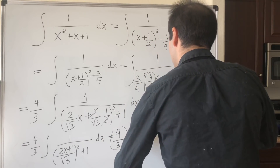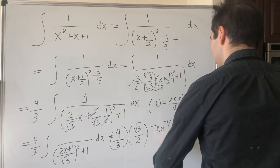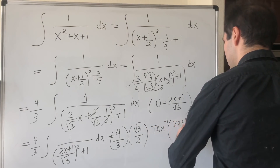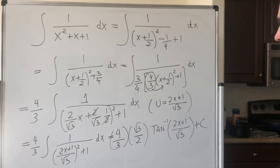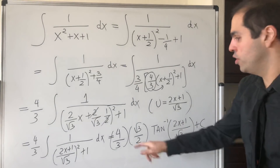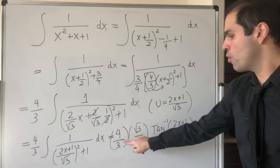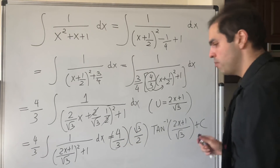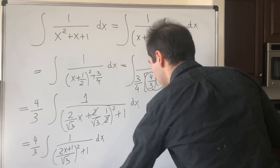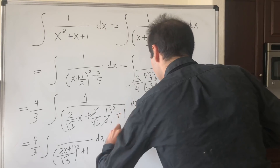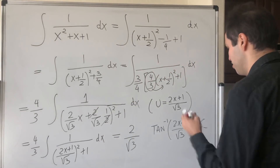You can use a u-substitution with u equals 2x plus 1 over square root of 3, and then du is 2 over square root of 3 dx. This gives four thirds times square root of 3 over 2 times arctangent of 2x plus 1 over square root of 3, plus a constant, which simplifies to 2 over square root of 3 arctangent of 2x plus 1 over square root of 3, plus C.